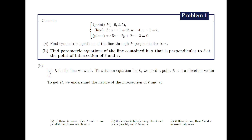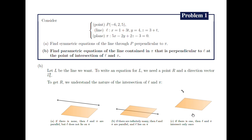To get the point R in L, you must first understand the nature of intersection of script L and pi. There are only three possibilities. First, there may be no intersection, meaning script L and pi are parallel but script L does not lie on the plane pi. Second, there may be infinitely many intersections, meaning script L and pi are parallel and script L lies on pi. Lastly, there may be a single point of intersection, meaning script L and pi are not parallel. The first case cannot happen since capital L is assumed to be perpendicular to script L at the point of intersection, so if there is no intersection we cannot have a capital L. If we get the second or third case, we can take R to be a point of intersection of script L and pi.